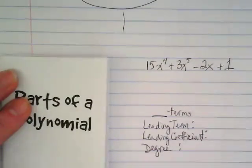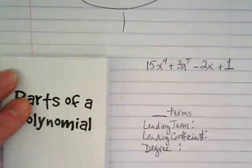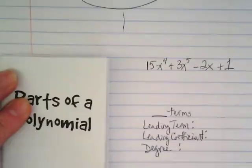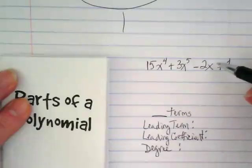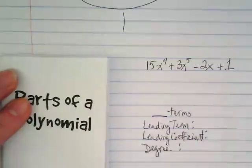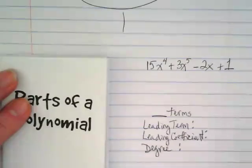What do you notice about the exponents? They're all positive. They're all higher than 3, except this one. It's not there, so it's an invisible one. Are they in order?